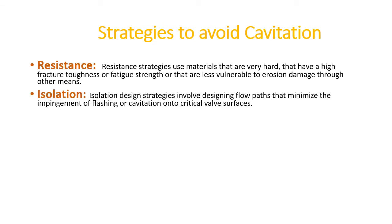The isolation design strategy involves designing the flow path to minimize the impingement of flashing or cavitation onto critical valve surfaces. This is mainly about designing the flow path through the valve and through the trim portion so that even if cavitation or flashing occurs, the portion of the valve exposed to it is very minimal.